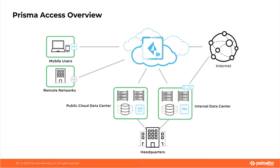It also minimizes coverage gaps or inconsistencies associated with a distributed organization. In the past, perhaps you had multiple point solutions for remote access deployed across your enterprise, and the access, user experience, and management were not consistent. With Prisma Access you don't have to worry about that because it's all encompassed within the cloud service. It also allows us to take advantage of the flexibility and elasticity of the cloud — as demand changes, we're able to grow or shrink to meet user load.